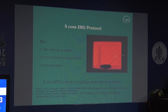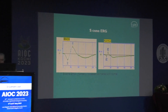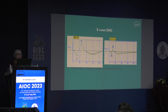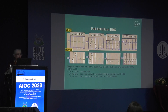To study the S cone response, a colorimetric or colored ERG can be used. An orange background removes the rod and L and M cone responses, enhancing the S cone response. With blue light stimulation in an orange background, the S cone response is enlarged and the waveform simplifies to one down wave and one up wave. Although not routinely performed, this approach allows us to study responses right down to the S cone level.